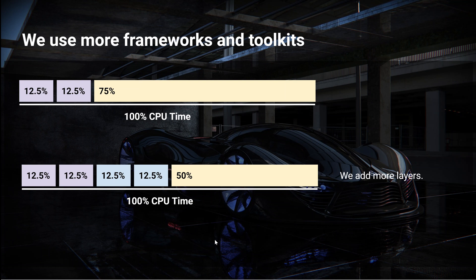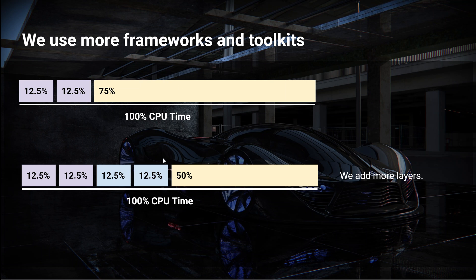Here's what happens once we start adding layers to our application. At the top we have just two layers each taking 12.5%, leaving 75% of the CPU time for our application. Then we add two more layers each taking 12.5%, which leaves only 50% of the CPU time for our application. Now obviously a part of those 25% used in the added layers would have been used in the original layers anyway, so it's not a straight 25% drop. But there will be some performance drop, and you don't have any control over the performance inside these added layers.